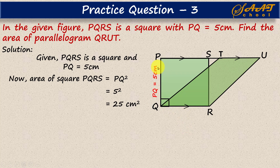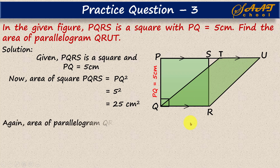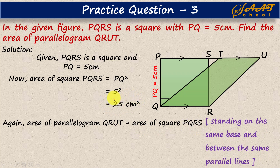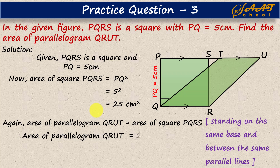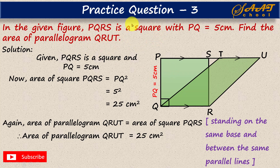Now that we have the area of square PQRS, note that the parallelogram QRUT and square PQRS are standing on the same base and between the same parallel lines. Every square is also a parallelogram. From Theorem 1, their areas are equal. Therefore, area of parallelogram QRUT equals area of square PQRS, which is 25 cm². Remember: every square and every rectangle is also a parallelogram.